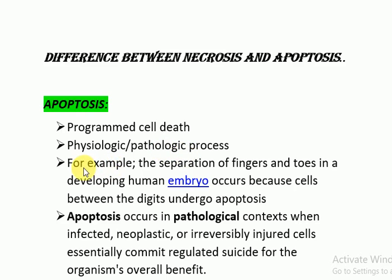For example, if it is physiologic, the separation of fingers and toes in a developing human embryo occurs because cells between the digits undergo apoptosis. So it is apoptosis that helps in the maintenance of organ size, organ development and remodeling in an embryo, and brings a balance between cell proliferation and elimination.